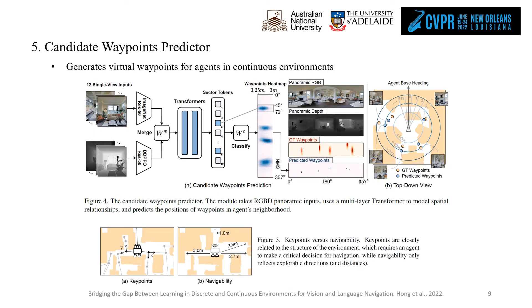As a result, we propose a candidate waypoint predictor to generate virtual waypoints for agents in continuous environments. As shown in the figure, the model takes RGBD features as input, passes them to a transformer to predict a heat map of possible waypoints. Each waypoint corresponds to an image for view selection, as well as a position that can be reached by executing deterministic low-level controls.